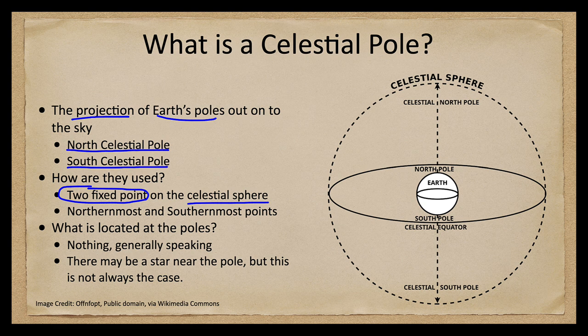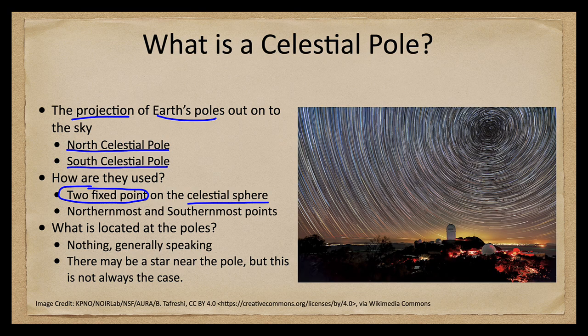Now how can we see that? One way we can see the celestial poles is with an extended exposure image such as this one. This one is looking from the northern hemisphere, and the central region — that vortex in the upper right-hand side — is actually the location of the North Celestial Pole. That central point is where everything seems to rotate, and all of these other stars appear to rotate around it. That's really just the Earth's rotation, but that fixed point is the extension of Earth's North Pole out into the sky.